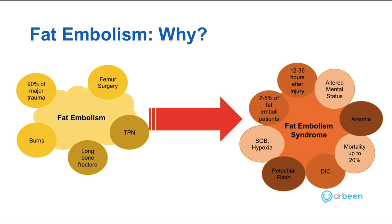Fat can also embolize. Fat embolism occurs in 90% of major trauma. It also occurs in femur surgery, long bone fractures, burns, and with TPN administration. Fat is stored in subcutaneous tissue but also in bone marrow, which explains why fat molecules and particles can dislodge. Despite 90% of major trauma patients having fat embolism, only a small amount — about 2-5% — develop what's called fat embolism syndrome, which is clinically significant.